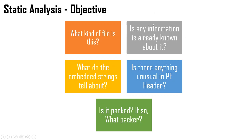The second objective is determining whether any information is already known about the file. You can extract the hash signature from that file and do a Google search with that hash. You can also search the hash in the VirusTotal website to easily find information — for example, if that malware has already been analyzed by someone else.